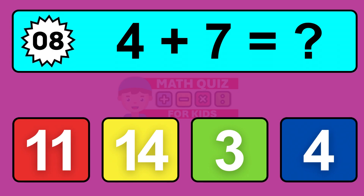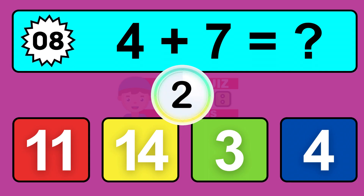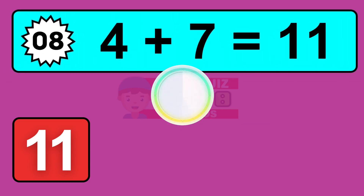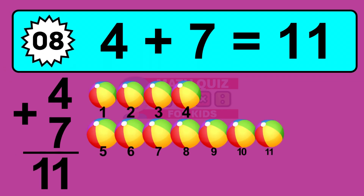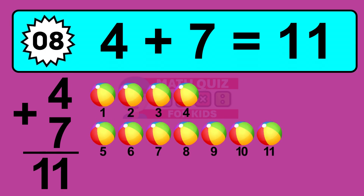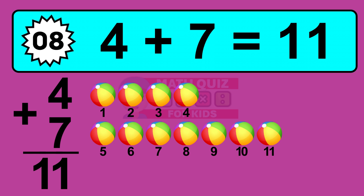Question 8. 4 plus 7 equals what? The answer is 4 plus 7 is 11. Let's count it: 1, 2, 3, 4, 5, 6, 7, 8, 9, 10, 11.